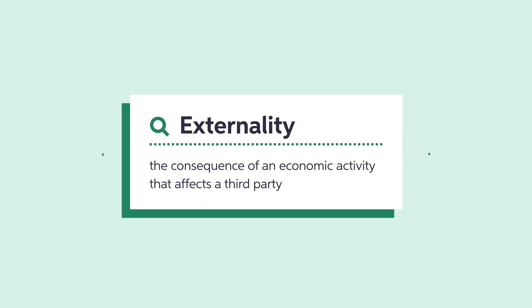There are two parties in every economic activity: the producer and the consumer. For the most part, economic classes focus on these two parties, but sometimes an economic activity has a consequence for someone else that isn't even involved in the cost — a third party. When this happens, we call it an externality.